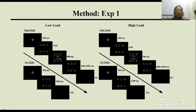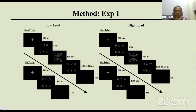In the high-load condition, we make the go task more difficult by introducing five to six different distractor letters. In the low-load condition, remaining letters were all the same, making it easy to search for X or N. In the high-load condition, it becomes difficult to search, and that is how we manipulate perceptual load. The stop signal and task structure remain the same.